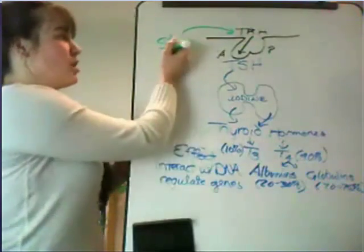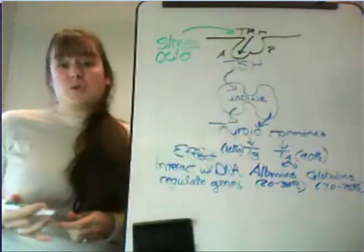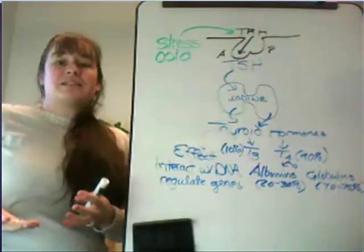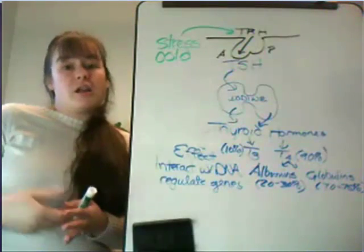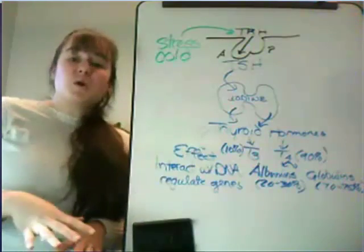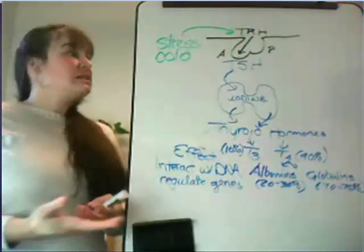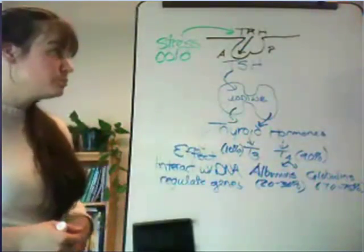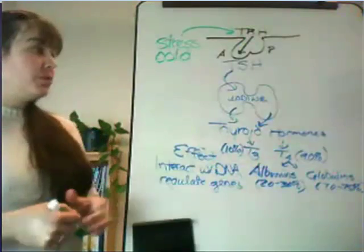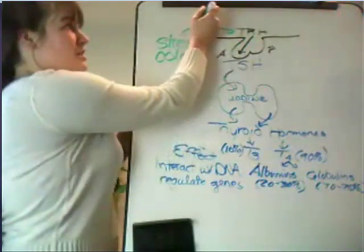In addition to stress, cold also triggers the system. Any time the body is exposed to cold for several days — for example, if you took a job as a ski instructor on a local mountain — your hypothalamus would respond by increasing the secretion of thyrotropin-releasing hormone. This is true of anything that puts you in a slightly hypothermic state, and both of these things start this system off.